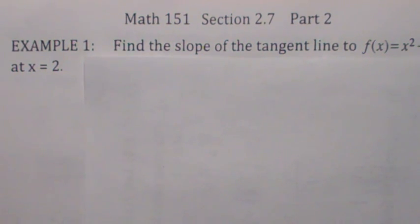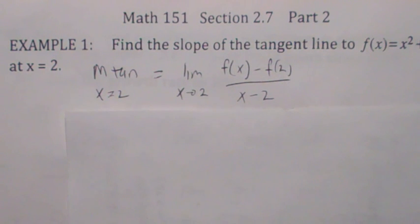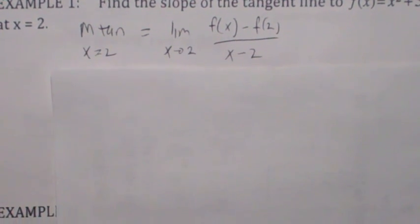The first question is find the slope of the tangent line to f of x equals x squared plus 5 at x equals 2. This problem could have also been worded find f prime of 2 or find the derivative at 2. And we have a couple different ways of computing f prime of 2. I'm going to use this version right now.